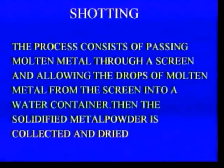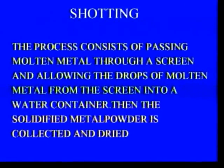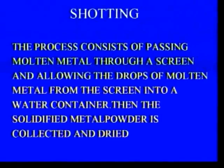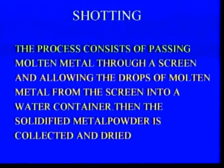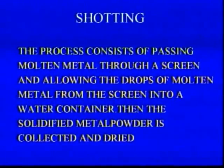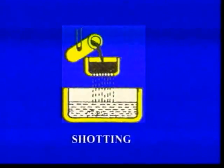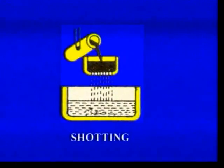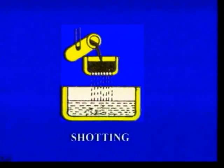Shorting is another method of manufacturing metal powder. This process consists of passing the molten metal through a screen and allowing the drops of molten metal from the screen into a water container. Then the solidified metal powder is collected and dried. There is a liquid metal that is made to pass from the sieve and collected in the water container, where the small liquid droplets get solidified.